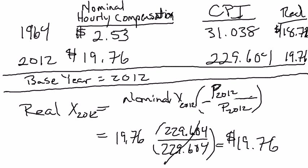Here's one caveat: this formula is what you use when the variable is expressed in dollars. If what you care about is expressed in percentage points — such as the distinction between nominal and real interest rates — then you have to use a slightly different formula, which is discussed in one of the later videos.